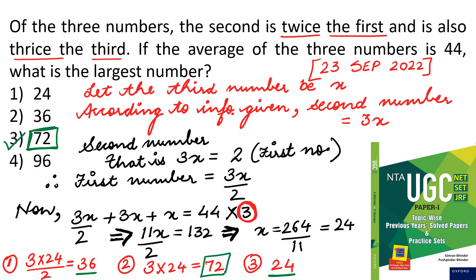Next question, again, this is again a very easy question, and this is also UGC net exam's September 2022's latest question. This is an easy question which if you read carefully on the spot, you should get 100% correct. Of the three numbers, the second is twice the first - the second number is two times the first number, and it is also thrice the third. The second number is three times the third number. If the average of the three numbers is 44, the average of three numbers is given in the question, that is 44, what is the largest number? So in this question, we will use a bit of logic.